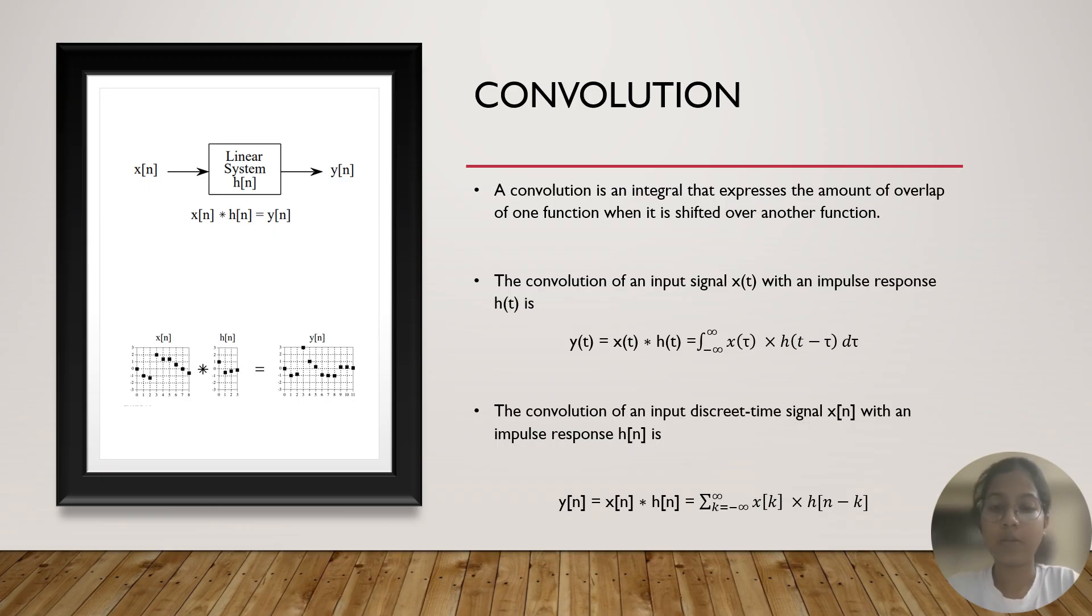Similarly, for an input signal which is discrete time signal, which has discrete points, you would replace the integration with summation. So, when an input signal is passing through a linear system with an impulse response of h of t, you get an output signal of y of t. And this y of t is equal to x of t convolution h of t.